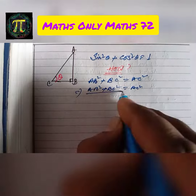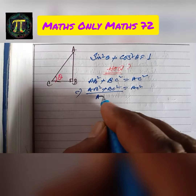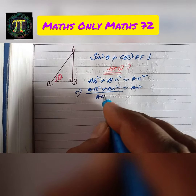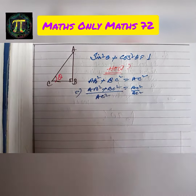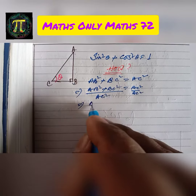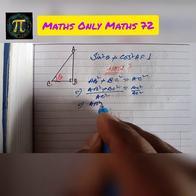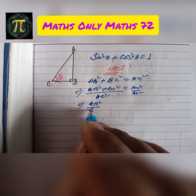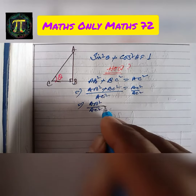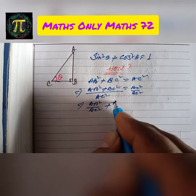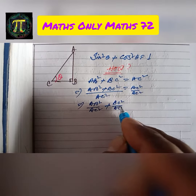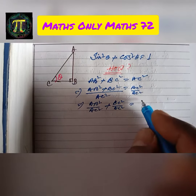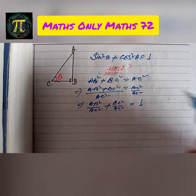We divide both sides by AC squared. So we can write AB squared by AC squared plus BC squared by AC squared equals 1.